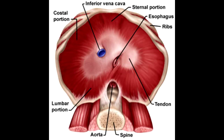Describe how pain from the diaphragm is referred. Pain from the diaphragm is referred to the shoulder via C5, and to the trapezius ridges via C3 and C4.